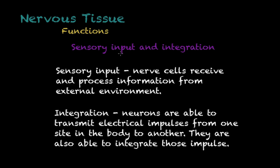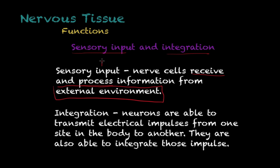The first function is sensory input and integration. Sensory input is the ability that nerve cells have to receive and process information from the external environment — in other words, sensing. Integration is a very special characteristic of this tissue, which allows it to integrate impulses transmitted from one cell to the other.